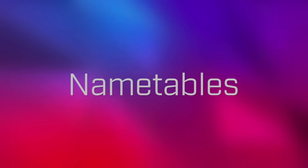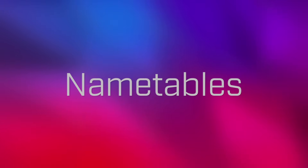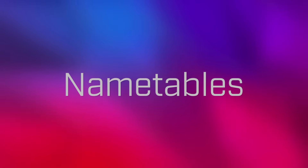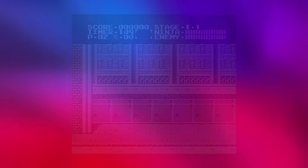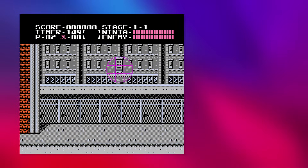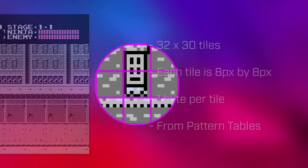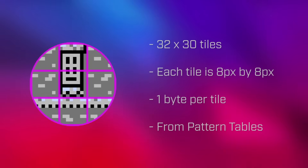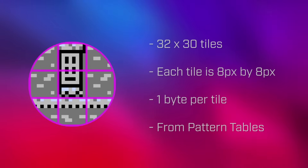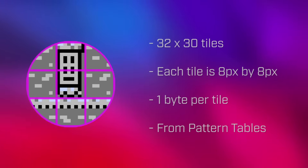The next section contains the PPU's name tables, which are used to lay out the background graphics for a game. They're structured as a grid of 32 by 30 cells, each of which represents an 8 by 8 pixel region of the screen. Each cell is represented by a single byte, which refers to one of the tiles in the pattern table.